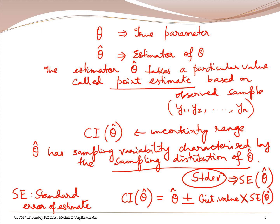I want you to note this generic expression because we are going to use this repeatedly in the next few lectures. The confidence interval around theta hat is given by the point estimate plus or minus some critical value times the standard error of estimate of theta hat. Both the critical value and the standard error come from the sampling distribution.